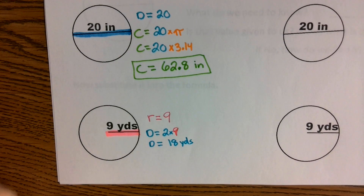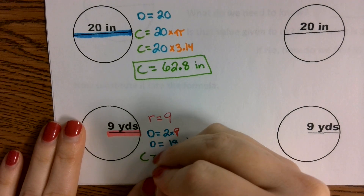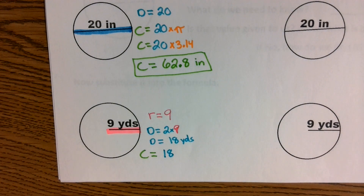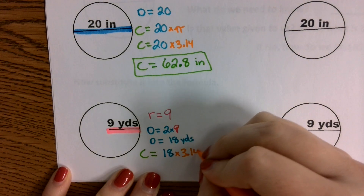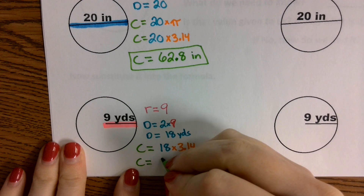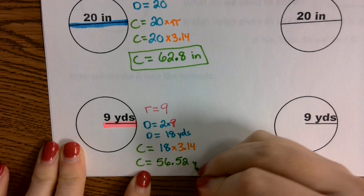Now I can take that information and find the circumference. Circumference is found by taking my diameter and multiplying it by pi — the diameter, which is 18, multiplied by 3.14. That's going to give us 56.52, and that is yards.